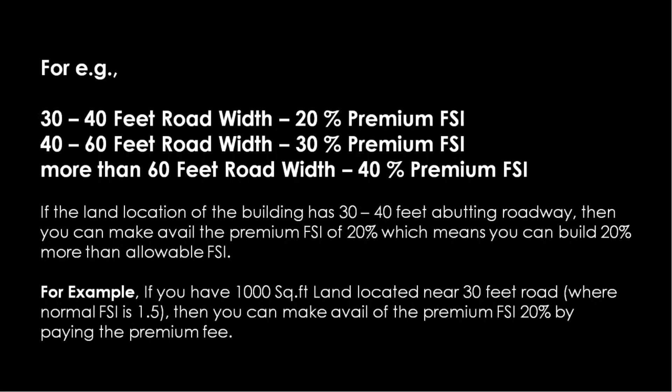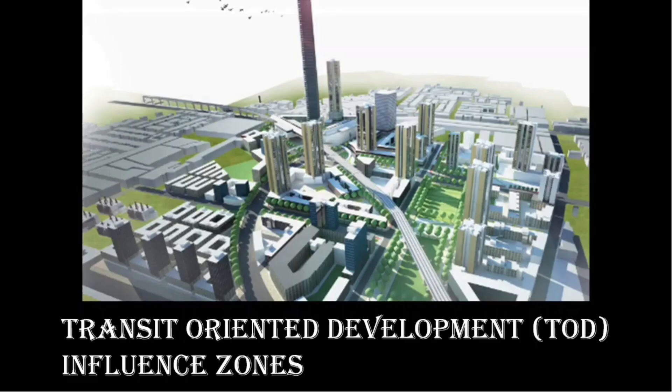If the land is located between a 30 and 40 feet abutting roadway, you can avail a premium FSI of 20%, which means you can build 20% more than the allowable FSI. For example, if you have 1,000 square feet of land located near a 30 feet road where the normal FSI is 1.5, you can avail the 20% premium FSI by paying the premium.